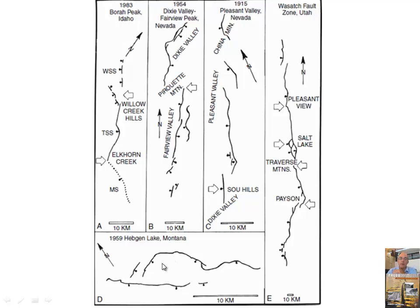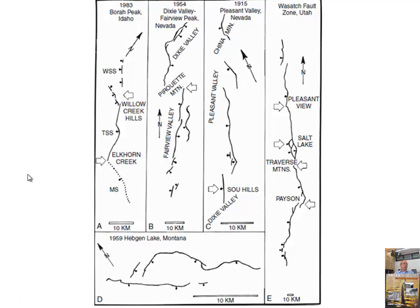This shows the Wasatch Fault Zone — the most famous normal fault in western North America — and it is segmented. These arrows show the ideas of where earthquake boundaries will occur. There are no historic earthquakes on the Wasatch Fault, but an earthquake would probably just be on one section, and this bend may be too big to go across. This is important — it's another reason why potential earthquake magnitudes for normal faults don't tend to be as large as for strike-slip or reverse faults, because of the segmented nature. They're more likely to stop early.